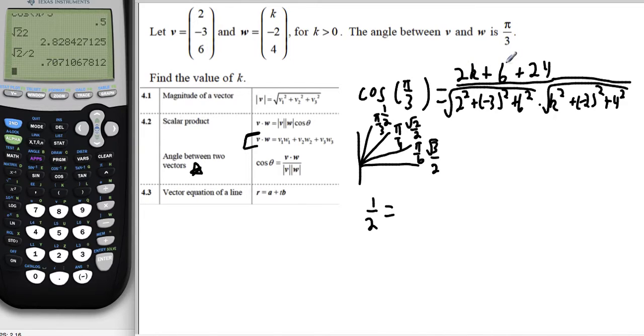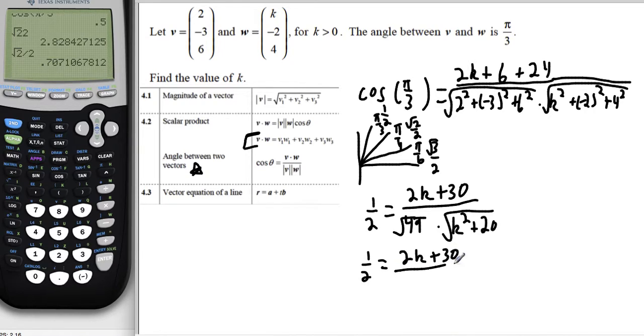All right. So we'll have 2k plus 6 plus 24. We can simplify that to 2k plus 30. And then let's see what we have here. 2 squared is 4, plus negative 3 squared is 9. So 4 plus 9 is 13, plus 36. 13 plus 36 is 49. So I'm taking the square root of that. And then here I'll have k squared plus negative 2 squared plus 4 squared. So k squared plus 4 plus 16 is k squared plus 20. We can simplify even more because I know that the square root of 49 is 7. So I'll have 2k plus 30 over 7 times the root of k squared plus 20.